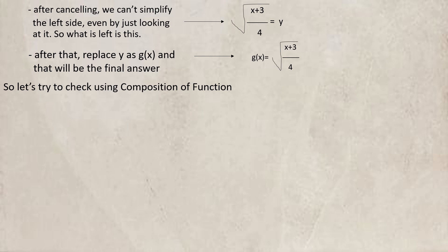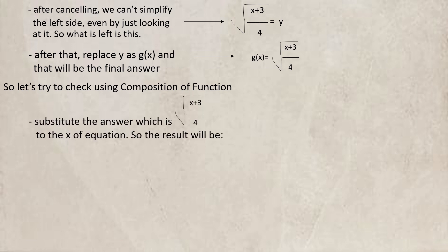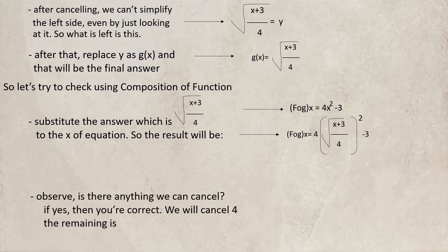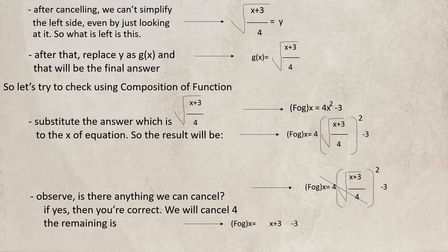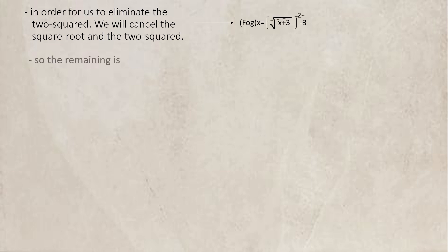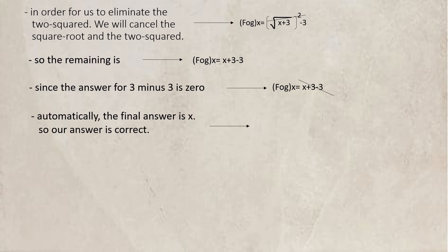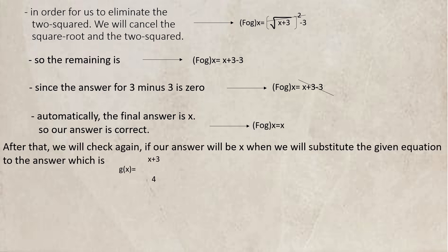g(x) = √((x + 3)/4). Let's check using composition of functions. Substitute the answer into the equation: f∘g(x) = 4·(√((x+3)/4))² - 3. Cancel 4, and the square root and squared cancel each other, leaving x + 3 - 3 = x. So f∘g(x) = x, our answer is correct. Checking again: g∘f(x) = √((4x² - 3 + 3)/4). The -3 and +3 cancel, leaving √(4x²/4) = √(x²). Cancel the square root and exponent, giving x. So g∘f(x) = x, our answer is correct.